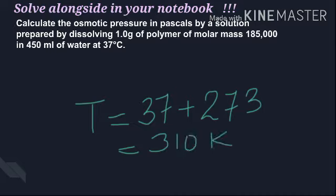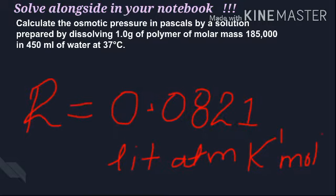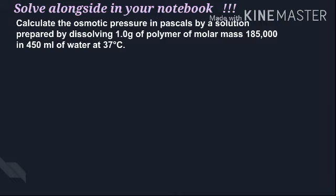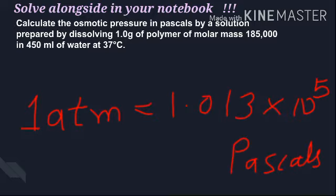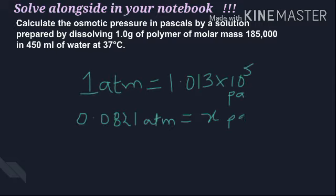Temperature is 37 degrees Celsius. We add 273 to convert to Kelvin, giving 310 K. Now R - the value of R is different for different units. If we take R in liter atmosphere, it is around 0.0821 liter atmosphere. We need to convert this to pascals.